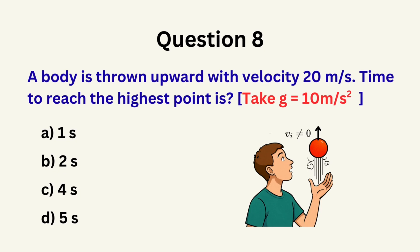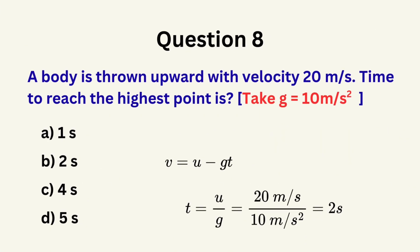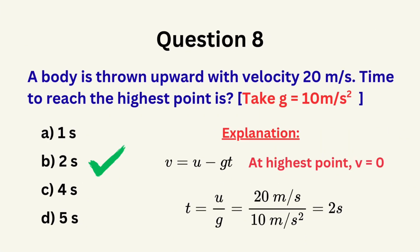Question 8: A body is thrown vertically upward with velocity 20 meters per second. Time to reach the highest point is... A. 1 second, B. 2 seconds, C. 4 seconds, D. 5 seconds. The correct answer is B: 2 seconds.